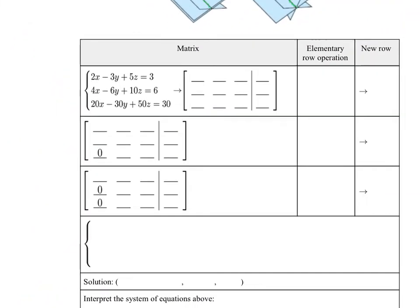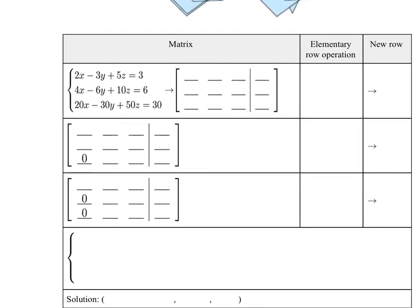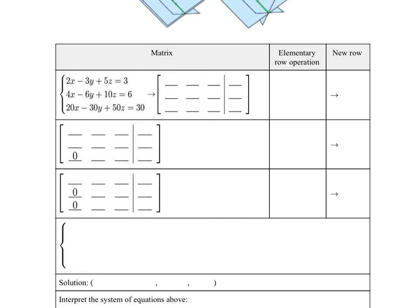We have one other situation that can happen with our system. This time they gave us the system and we want to write the augmented matrix. The augmented matrix is written without any of the variables: 2, negative 3, 5, 3 for row 1; 4, negative 6, 10, 6 for row 2; and 20, negative 30, 50, 30 for row 3. We want to use elementary row operations again to rewrite this.